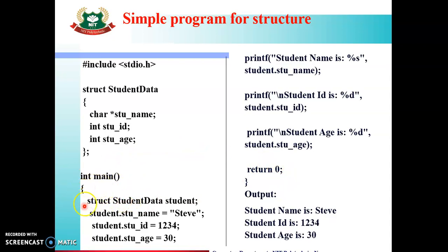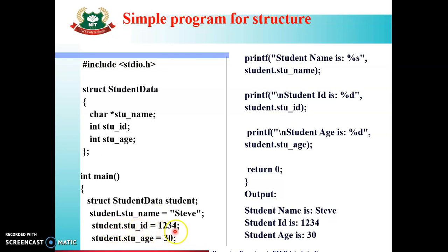Inside the main function, we create the structure variable: struct student_data student. Now we assign values using the dot operator. student.stu_name = "Steve"; assigns the name. student.student_id = 1234; assigns the ID. student.student_age = 30; assigns the age. This is how we have assigned values to all three members of the structure.